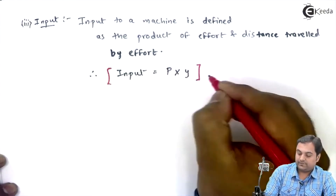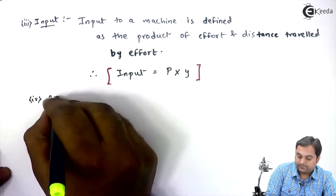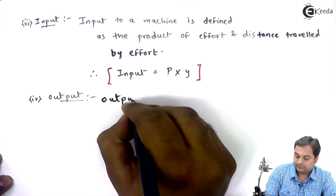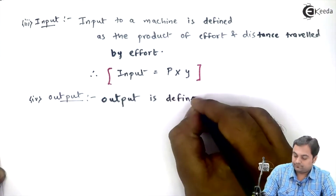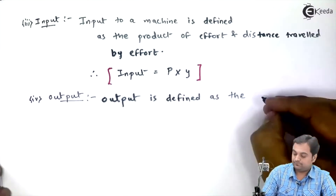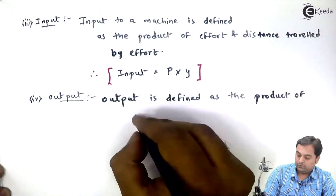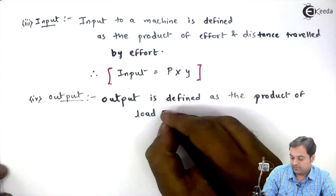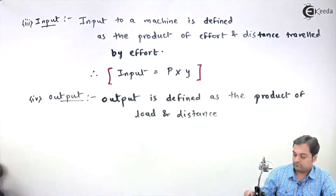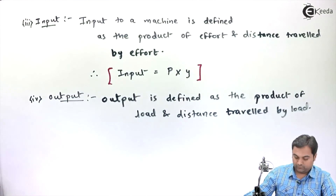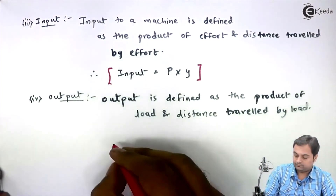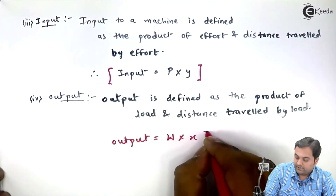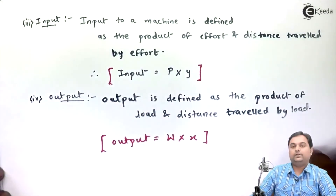Output is defined as the product of load and distance traveled by load. Therefore, output is equal to W into X — that is load multiplied by distance traveled by load.